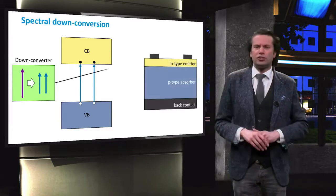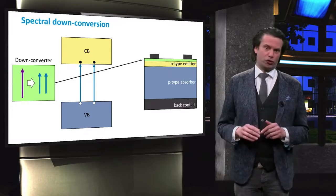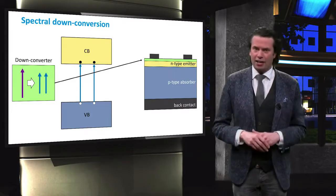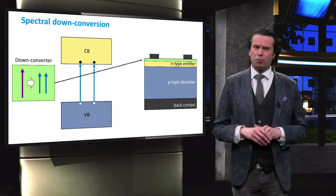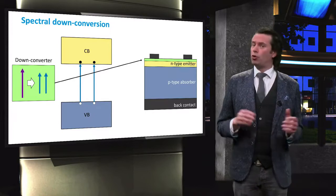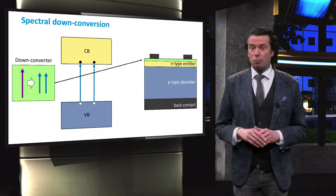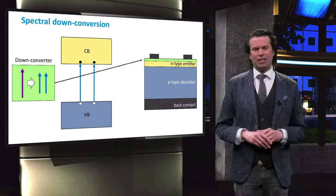In contrast to upconversion, a downconverting layer has to be at the front of the solar cell, as highly energetic photons have a high absorption probability and are therefore quickly absorbed in the absorber layer. Because of the required placement at the front of the cell, parasitic absorption might be a problem in this technology.